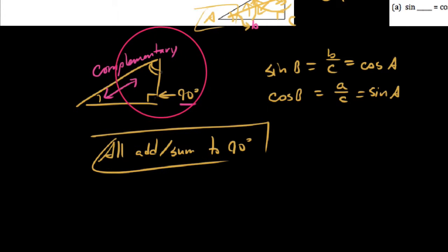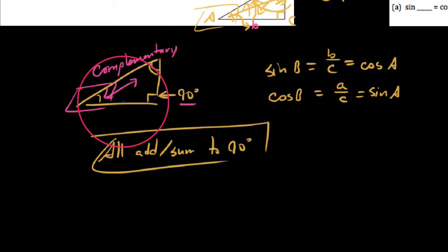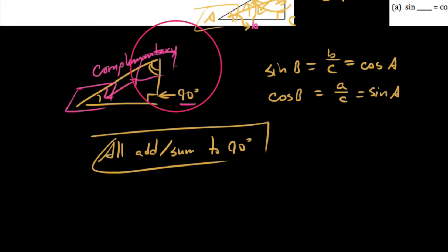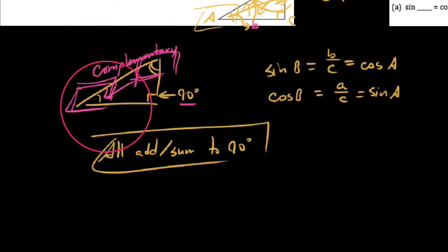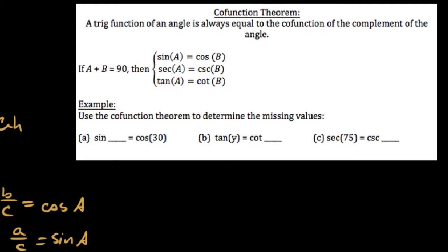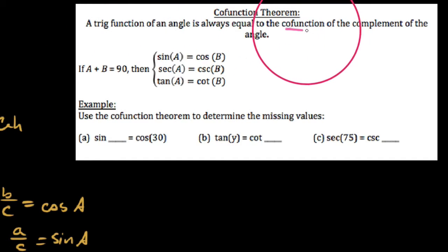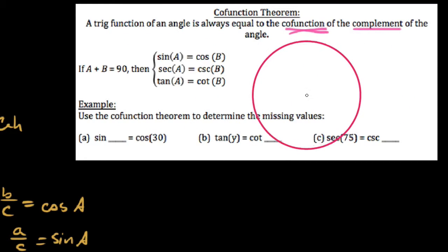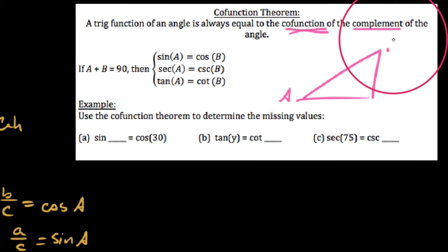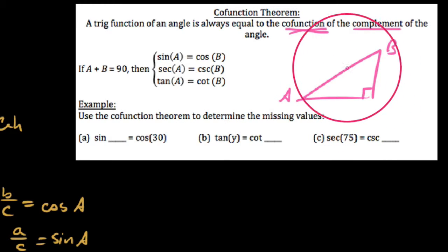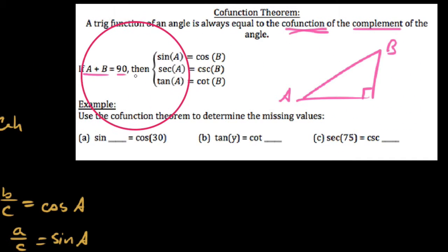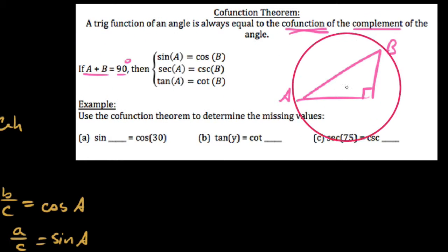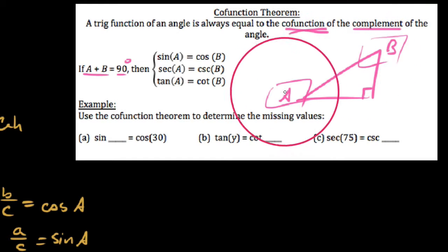The co-function theorem basically says: if you're taking the sine of one angle and you get the same thing as the cosine of the other, and these are the two acute angles in a right triangle, then the sine or cosine of complementary angles always have to be equal. A trig function of any angle is always equal to the co-function of the complement of that angle. So, given a right triangle with complementary angles a and b — where a plus b equals 90 degrees — then the sine of a equals the cosine of b.